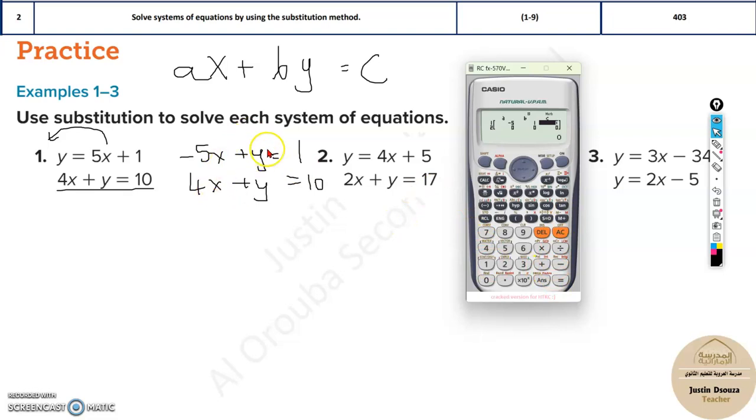If there is nothing, that means it's 1. If it is minus y, then it will be minus 1. But here it's plus y, that means it's 1, and lastly we have 1. Here we have 4, 1, and 10.